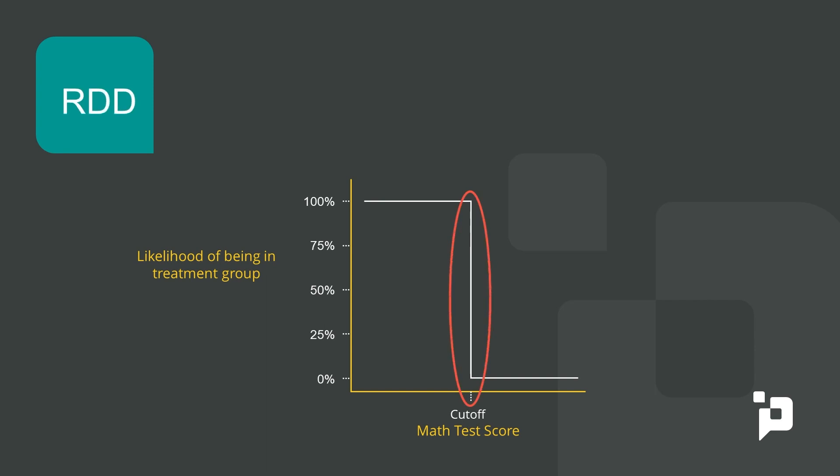The regression discontinuity design uses this fact to estimate the treatment effect of the program or intervention. The idea is right around this cutoff, the students who were just above the cutoff are nearly identical to the students who were just below the cutoff. And the idea is that there is no real difference between the two.